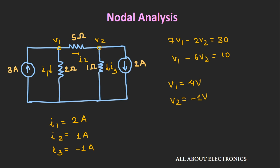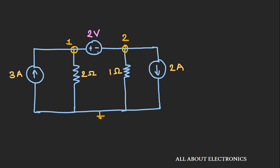Using nodal analysis, we can find the current through all circuit elements. Now let's modify this circuit by replacing the 5 ohm resistor with a 2V voltage source and try to solve it using nodal analysis. You will find some difficulty, because earlier we had a resistance but now we have a voltage source. We don't know the current flowing through this voltage source, nor the equivalent resistance. If we had a current source, nodal analysis would be easy, but for a voltage source we don't know either the equivalent resistance or the current.